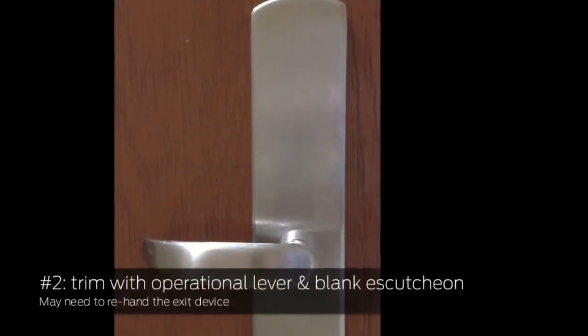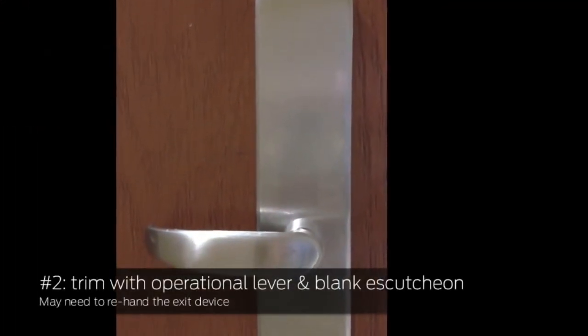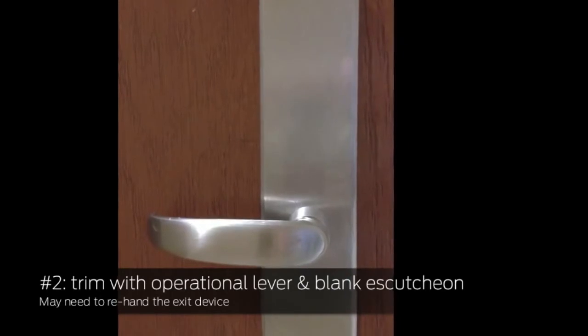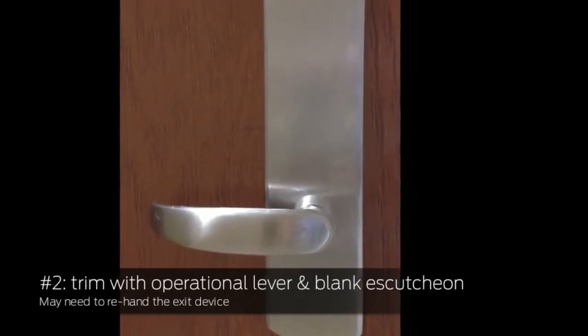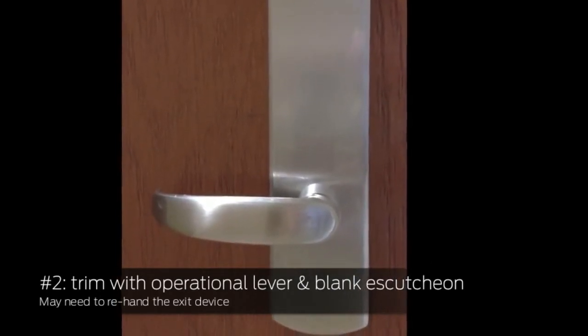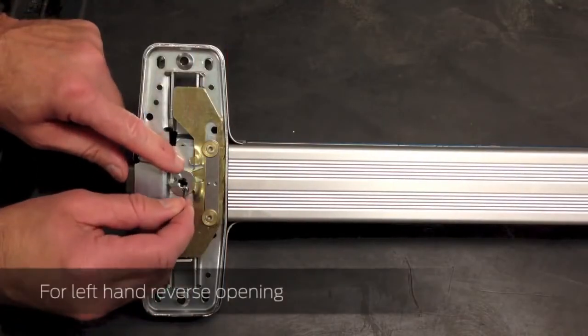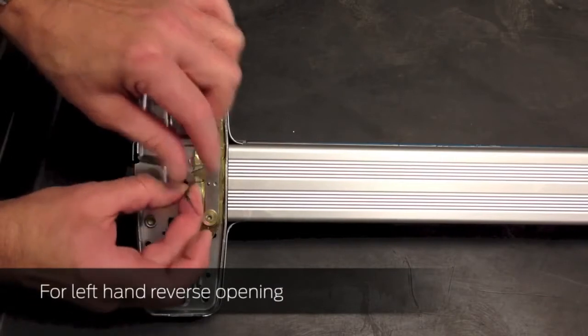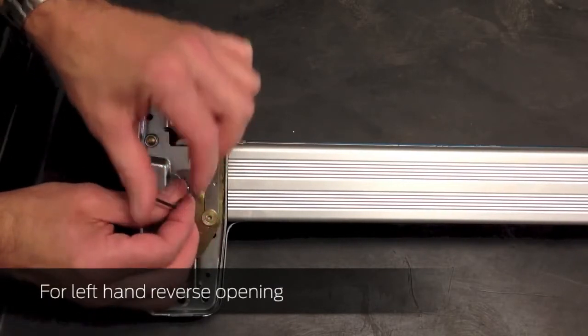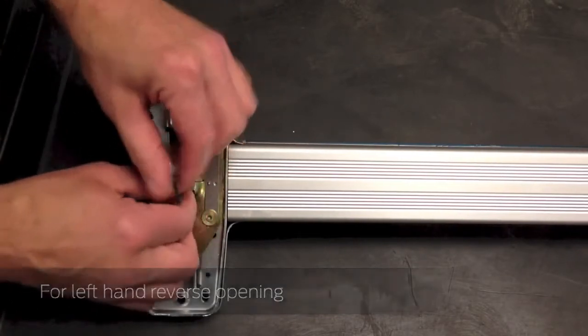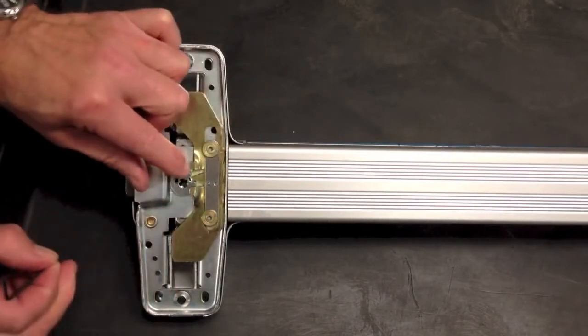When installing trim that has an operational lever and a blank escutcheon, as this video demonstrates, you may need to re-hand the exit device. If your opening is left-hand reverse, remove the NL drive screw, rotate the cylinder cam clockwise, and re-insert the NL drive screw.